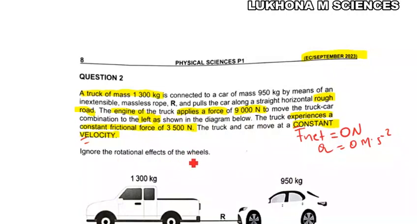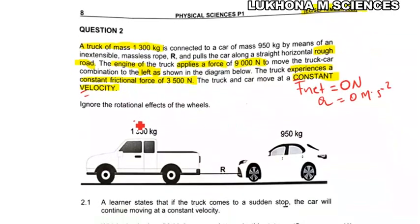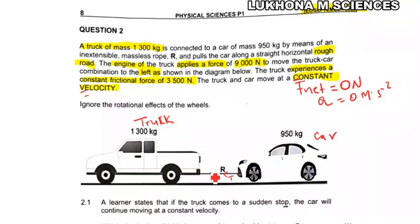Ignore the rotational effects of the wheels. In the diagram, we have the truck and the car connected by a rope. The rope creates tension — it pulls the car in one direction, and the reaction tension pulls the truck backwards, so tension acts on both objects in opposite directions.